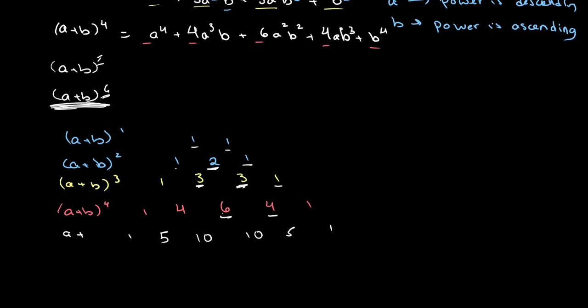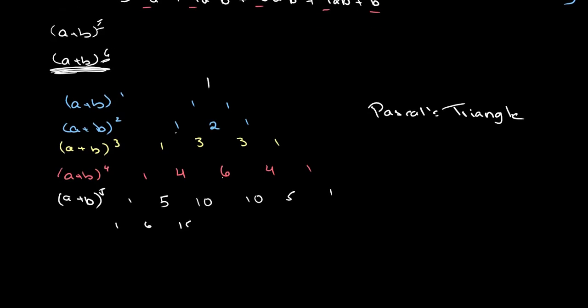This gives us the coefficients of a plus b to the fifth power, and what we end up with is something called Pascal's triangle. Pascal's triangle is essentially this triangle created by writing out the coefficients of different powers of a plus b. At the top we write 1 for a plus b to the power of 0. The next line is 1, 6, 15, 20, 15, 6, 1. You can go all the way up — if you want a plus b to the 100, find the hundredth row.